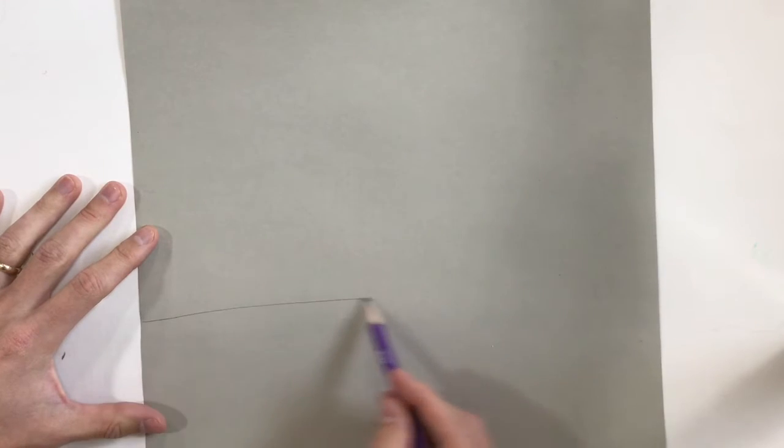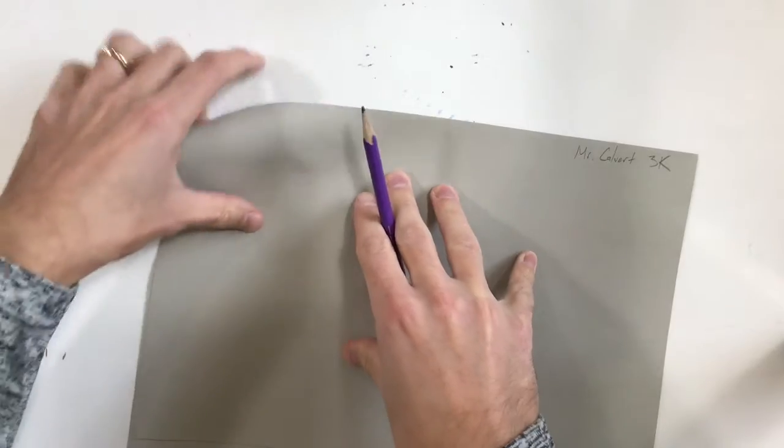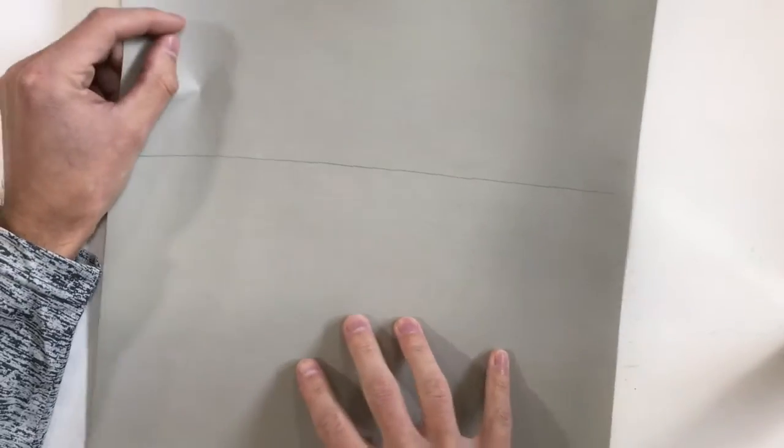So I'm actually going to use the back of my paper to sketch out a couple ideas for my Richard Serra design. Something that you might want to do is maybe just draw a line across the middle like this. This is the back of my paper. And then I'm going to create a design up here, I'm going to create a design down here.